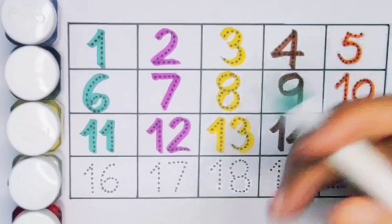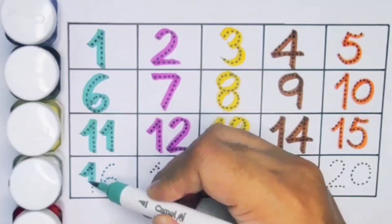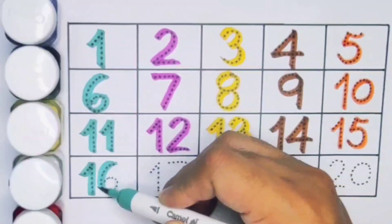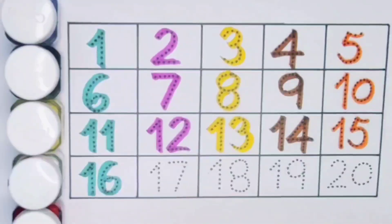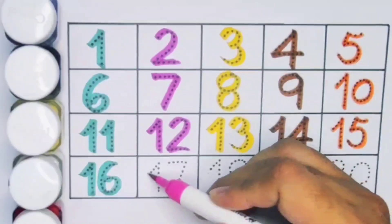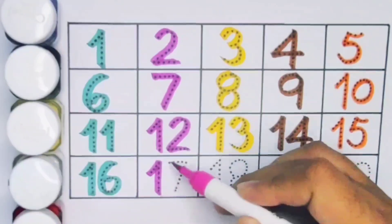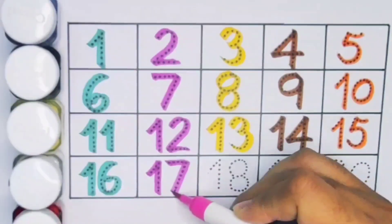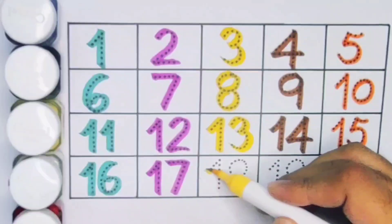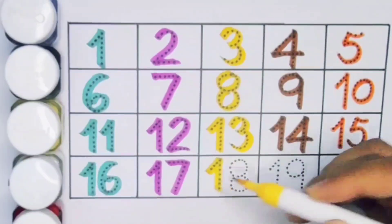Next kids 16, 1-6-16. Number 16. Next kids 17, 1-7-17. Number 17. Next kids 18, 1-8-18.